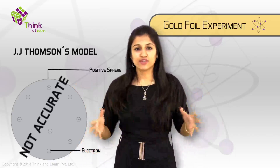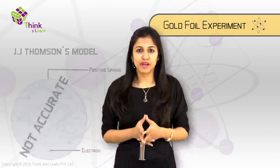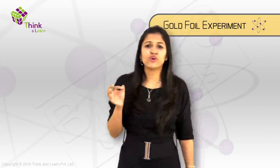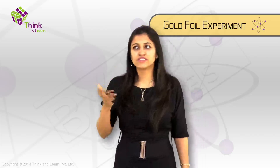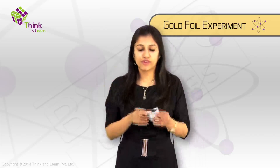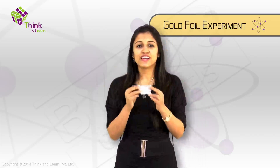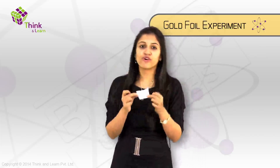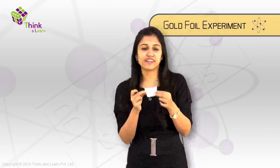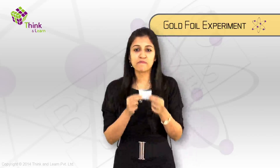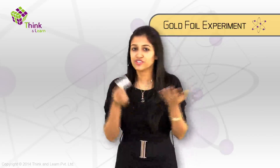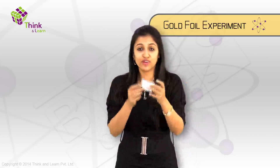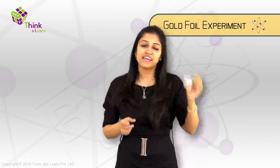Let's get into this experiment now. They started out with a very thin gold foil — just like any other foil, like your tin foil or aluminum foil, you would have seen that. Wouldn't it be just super if your mom packs your food using gold foil instead of the aluminum foil which it's normally packed in?